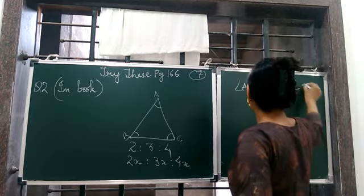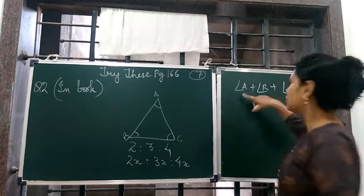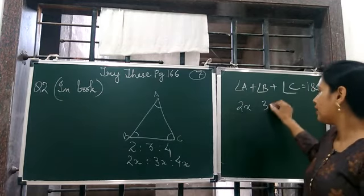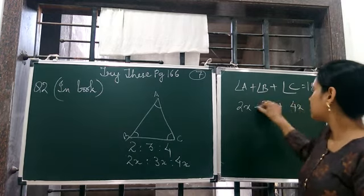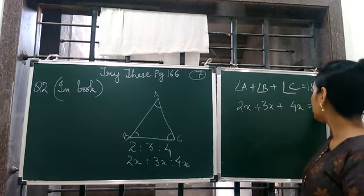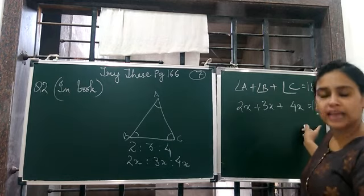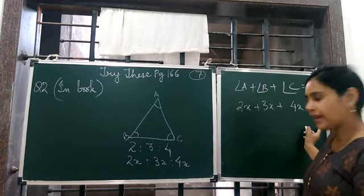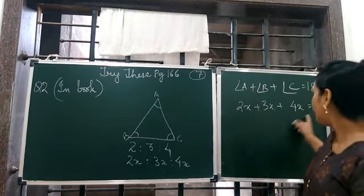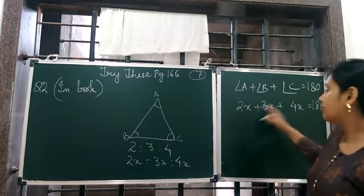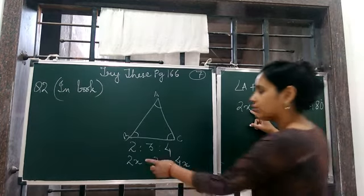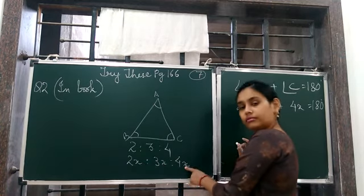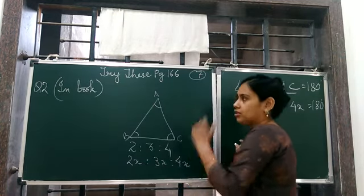Then angle A plus angle B plus angle C is equal to 180 degree. That means by angle sum property, this is equal to 180 degree. Now suppose angle A is equal to 2x, B is 3x, C is 4x, then total is how much? 180 degree. From this equation, can we get the value of x? Yes, we can get the value of x. From here we get the value of x and then after finding the value of x, we put the value here, we get the first angle, the second angle, the third angle.